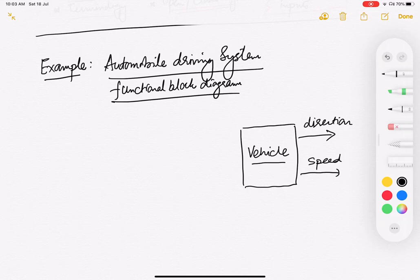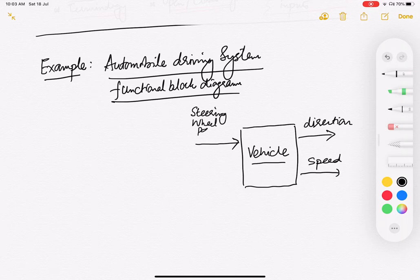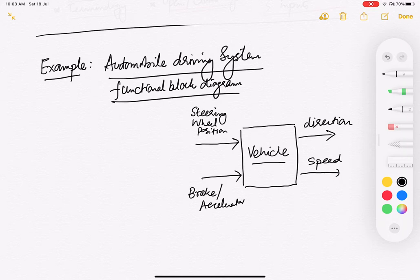Now what are the inputs that go into a vehicle? You control the direction using the steering wheel position — so the steering wheel position is one of the inputs that goes into the vehicle. The other input which controls the speed is actually your brake or the accelerator that you press. So with the help of the steering wheel position we control the direction of the vehicle, and with the brake or accelerator we control the speed of the vehicle.